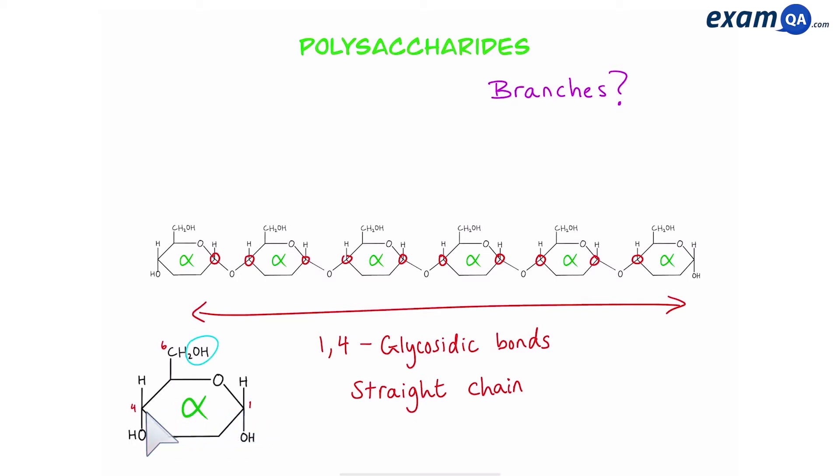So if you look at this alpha glucose we're going to highlight the OH on carbon number 6. So let's say that we have another alpha glucose coming along. So carbon number 1 and carbon number 6 are going to join together and form a bond. This is a 1-6 glycosidic bond.